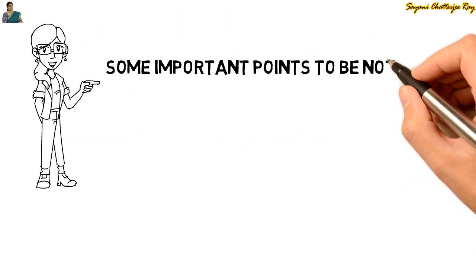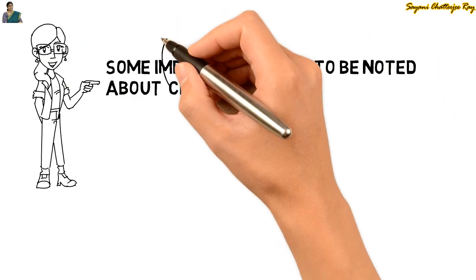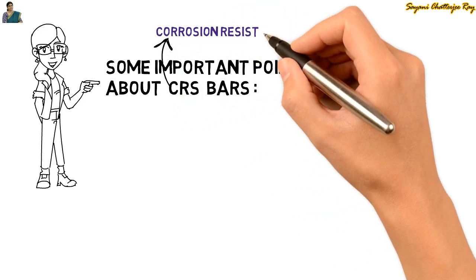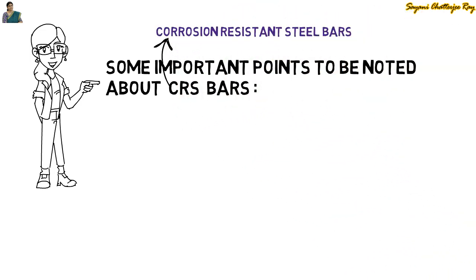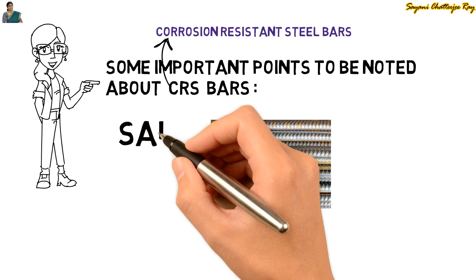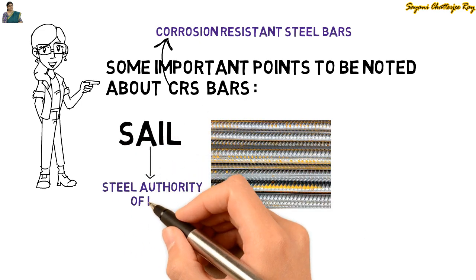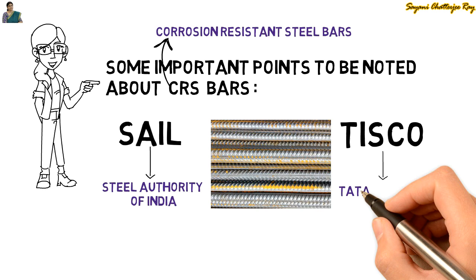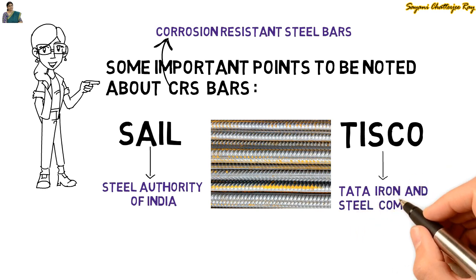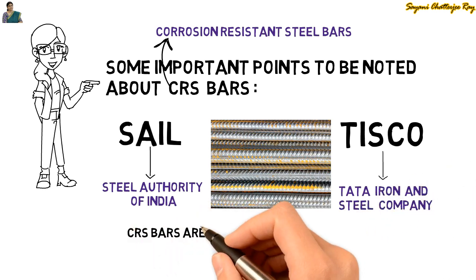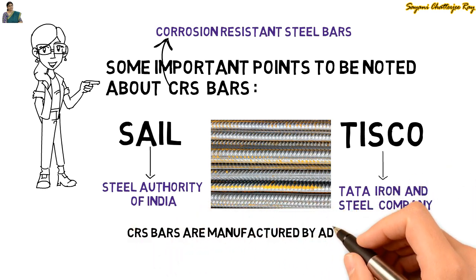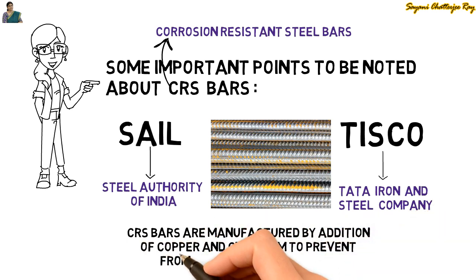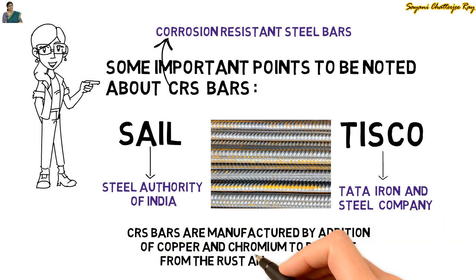Now we will see some important points about CRS bars. CRS stands for Corrosion Resistant Steel bars. In India, SAIL (Steel Authority of India Limited) and TISCO (Tata Iron and Steel Company) are producing CRS bars. CRS bars are manufactured by the addition of copper and chromium so as to prevent them from rust and corrosion.